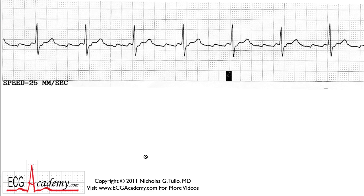Stay tuned for more Chalk Talks every week. This rhythm strip is something that I found on the telemetry unit, and it's a very common strip — a common arrhythmia. I listed it as basic, but it doesn't exactly look like the typical textbook picture of this particular arrhythmia. So that's why I thought it would be fun to go through it step by step and teach you how to recognize this arrhythmia while looking at strips on the units.